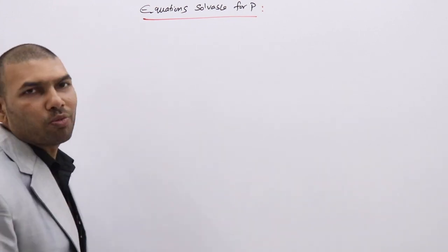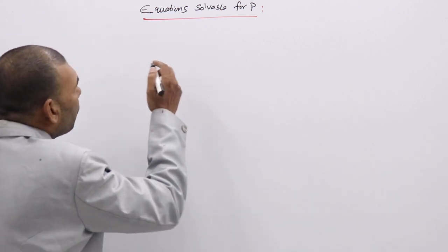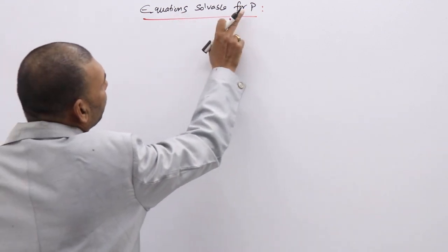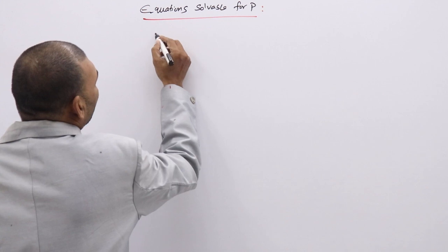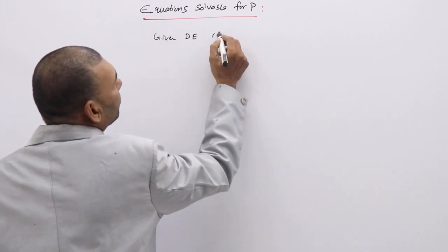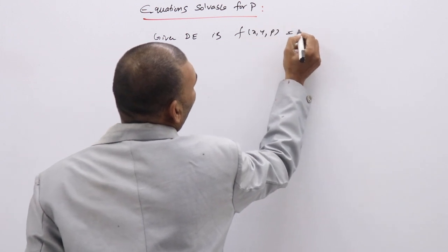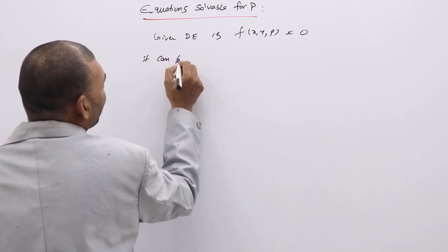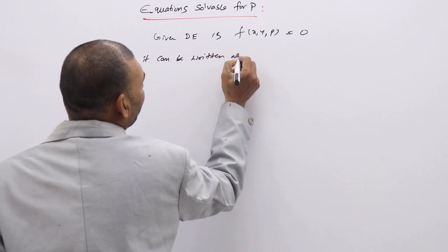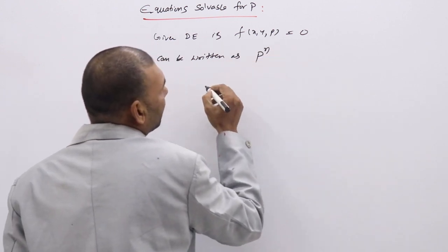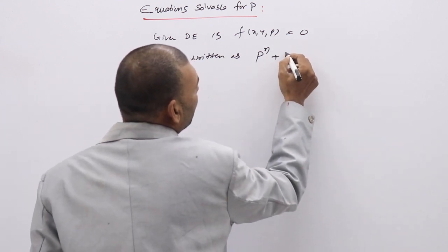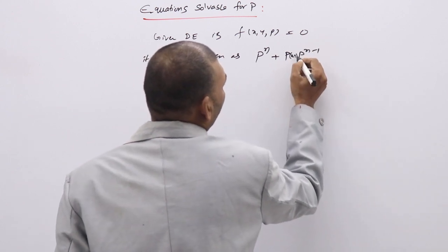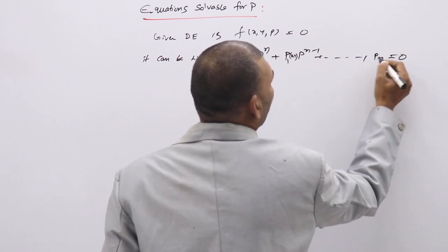The first type is the equation Solvable for P. How do we solve a DE of first order but not first degree which is in the form Solvable for P? We know that if the given DE is in the form F(x, y, P) = 0, it can be expressed as P^n + P1(x,y)·P^(n-1) + ... + Pn = 0.